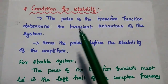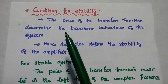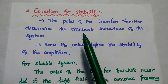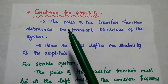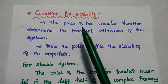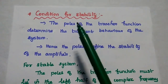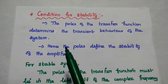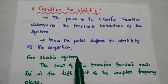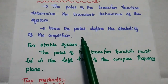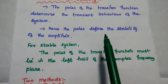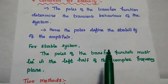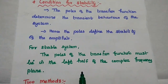Next is the condition for stability. The loop gain A·beta in the denominator of the gain formula determines the stability of the feedback system. The poles of the transfer function determine the transient behavior of the system, and hence define the stability of the amplifier. For a stable system, the poles of the transfer function must lie in the left half of the complex frequency plane.